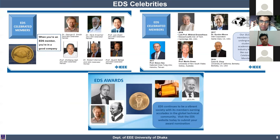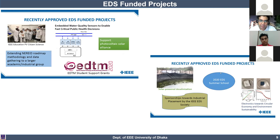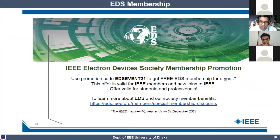EDS recognizes contributions in the field with many distinguished fellows. For example, Professor Leo Esaki is known for Esaki diodes and received the Nobel Prize for that. Professor Martin Green is one of the pioneers in solar cell technology and his books are textbooks in many departments. EDS also provides funds for small projects — such as recently supported projects on photovoltaic solar cells and solar power desalination.